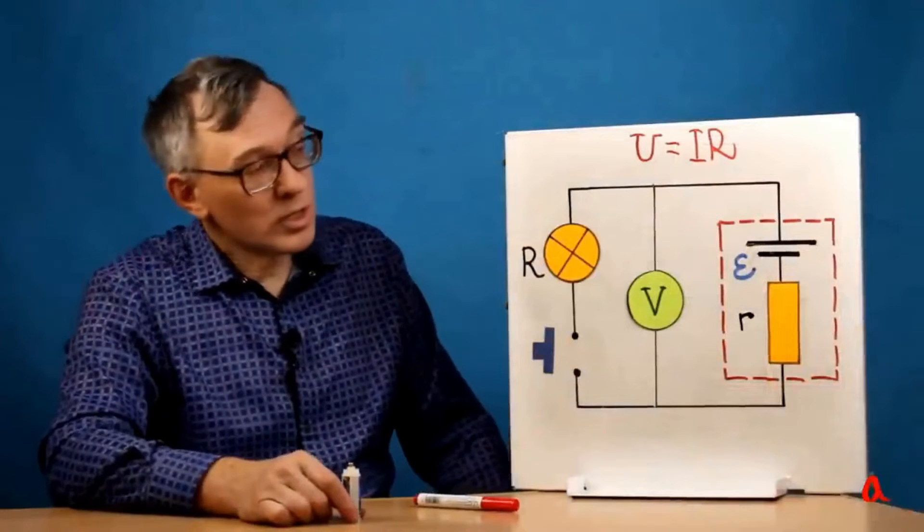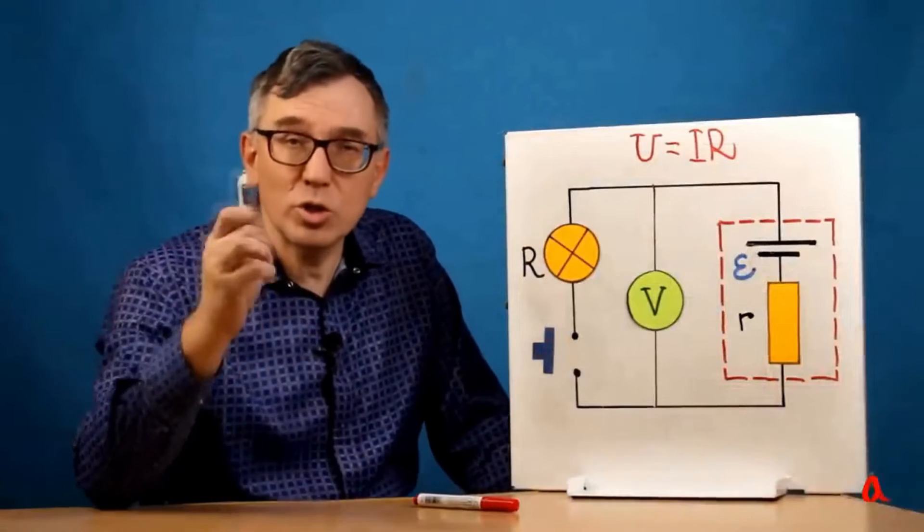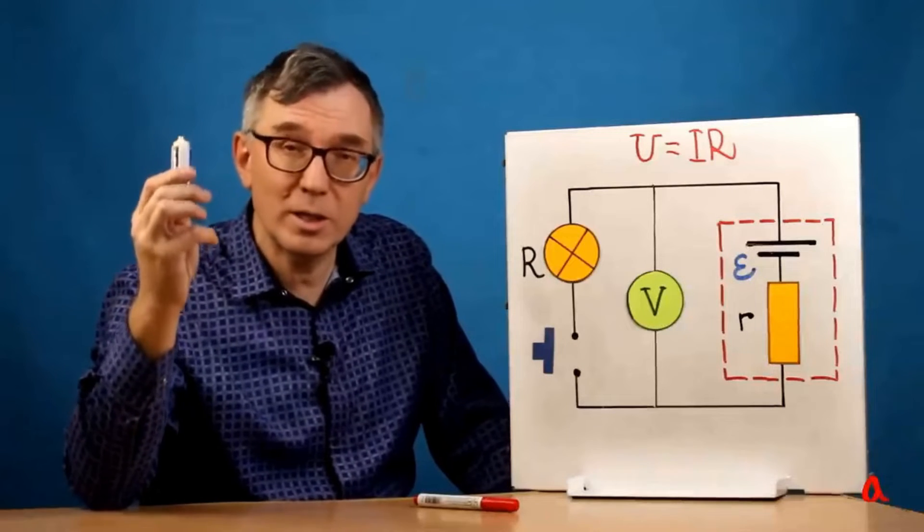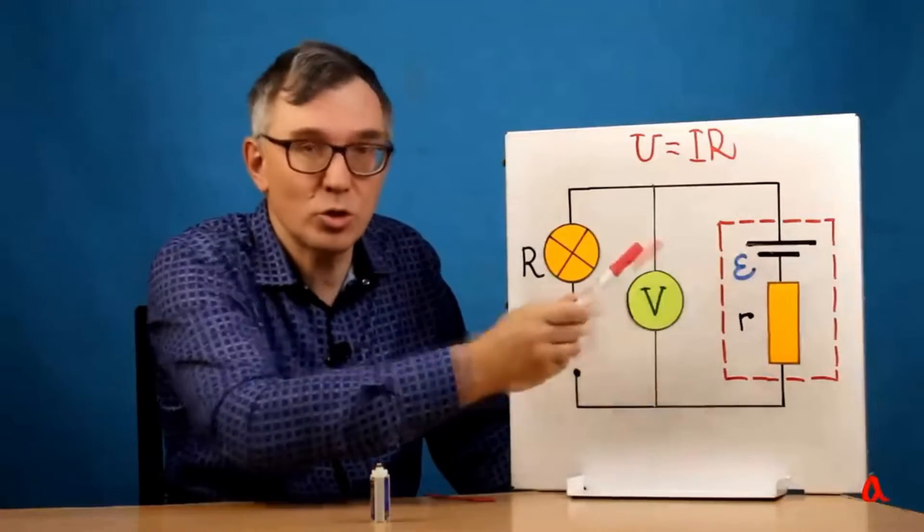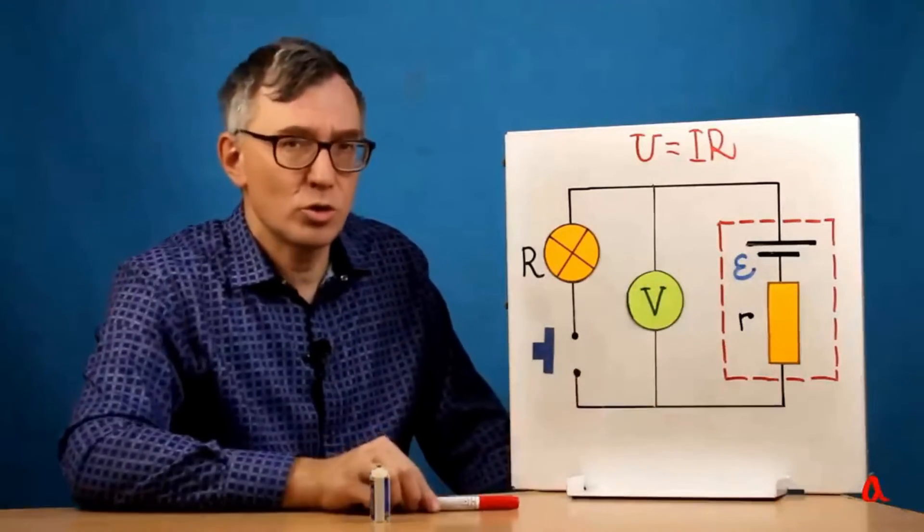In this diagram the battery is depicted by this red outline. And in electrical engineering it is considered that a battery consists of two elements connected in series. First, this is the origin of electromotive force. And second, this is the resistance within the source.